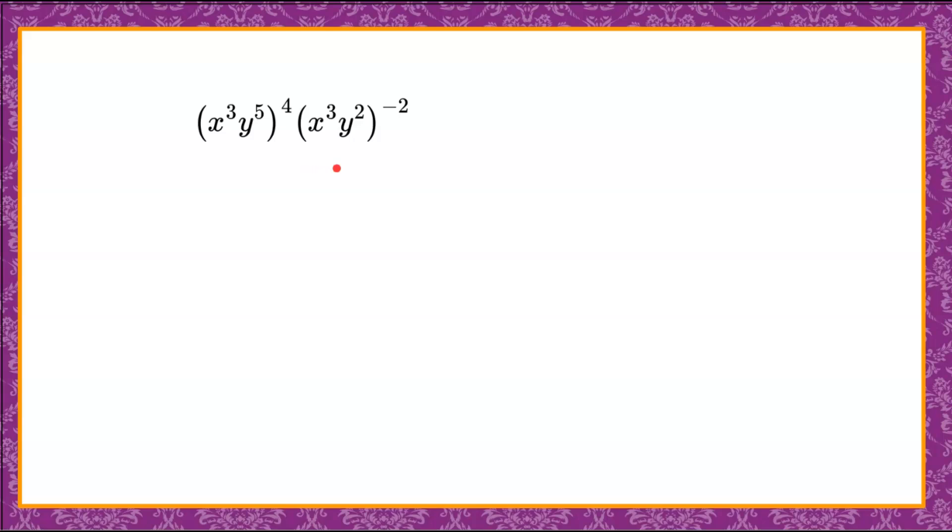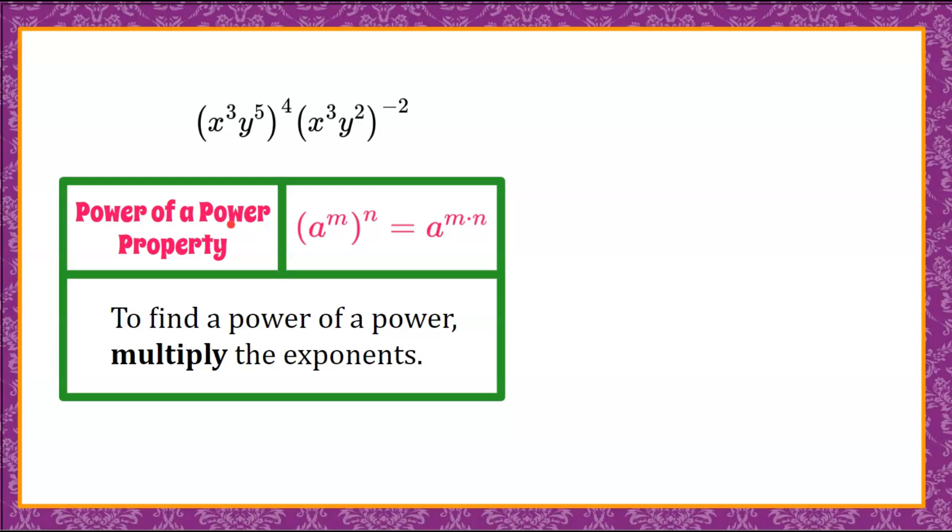First thing I want to do is just simply look at this expression. I can see that we have parentheses and an exponent. So that's when we're going to discuss a power of a power property. The expressions inside the parentheses are in simplest form because they have different bases. That means we are going to multiply the exponents inside the parentheses by the exponent outside the parentheses. To find a power of a power, we're going to multiply the exponents.